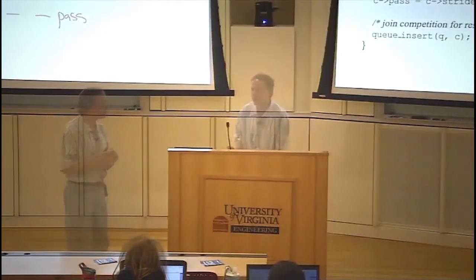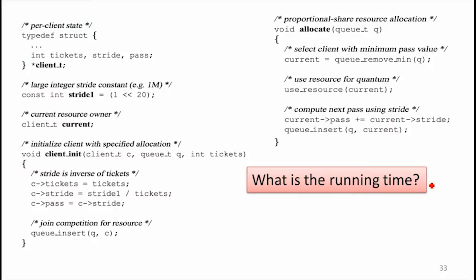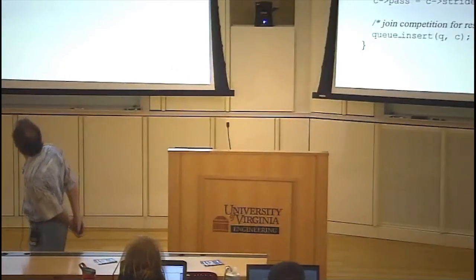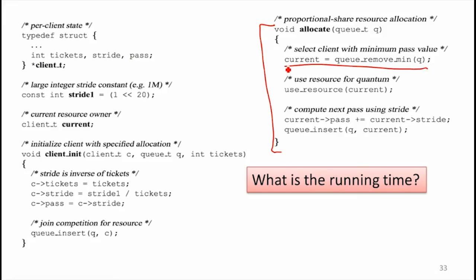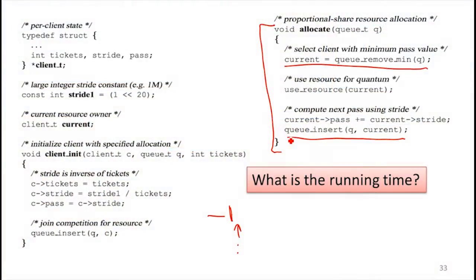This gives you a lot of flexibility and control. We also want to limit the time it takes to do scheduling. What is the running time of a stride scheduler? The main work in the allocate step — deciding which process to run — is selecting a task from the task queue, specifically finding the minimum pass value. The cost depends heavily on the data structures used. If you keep the queue sorted, finding the minimum is constant time but insert is expensive. If unsorted, finding the minimum is linear. Either way, you can't do better than log n time.